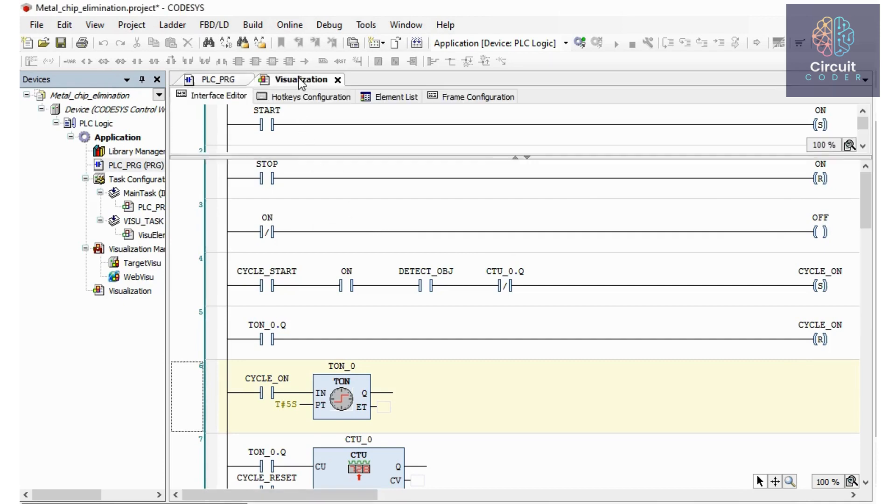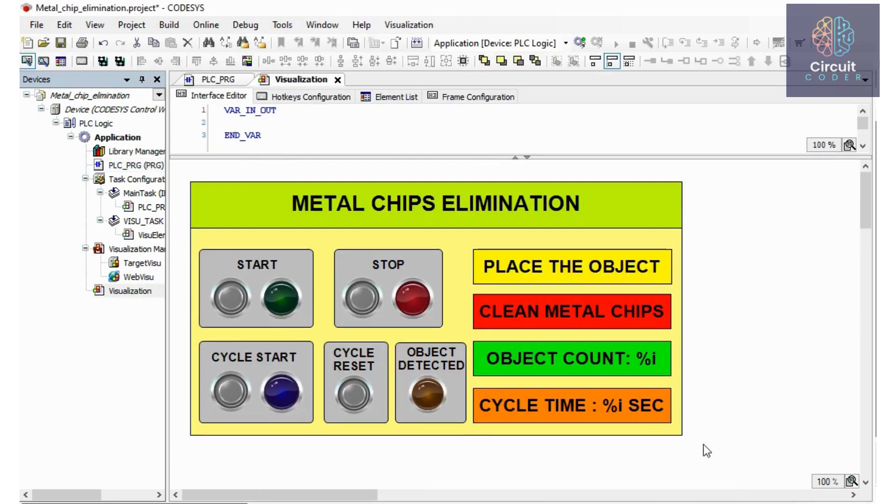Now let us have a look at the visualization video. Here I have provided start button and indicator, stop button and indicator, cycle start button and indicator, a cycle reset button, an object detected indicator and these four tabs will show the status of the current sequence.